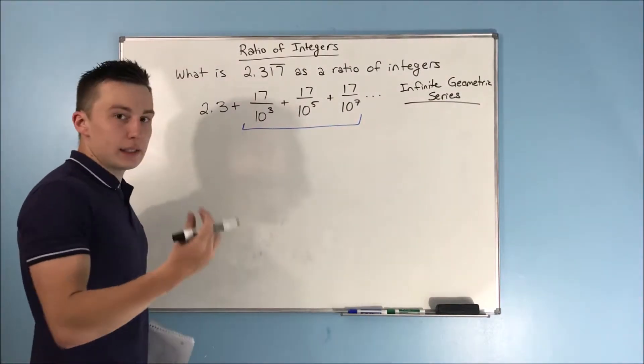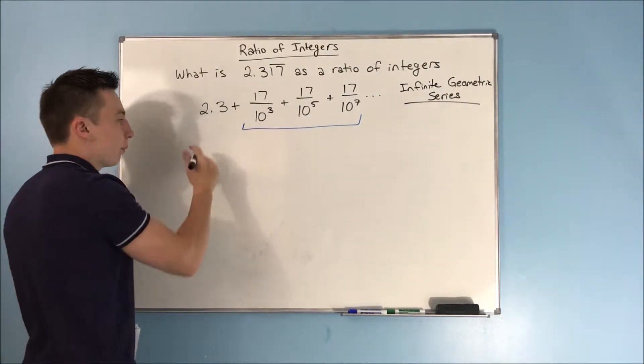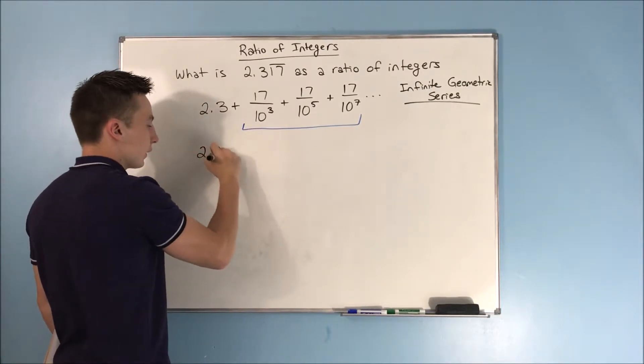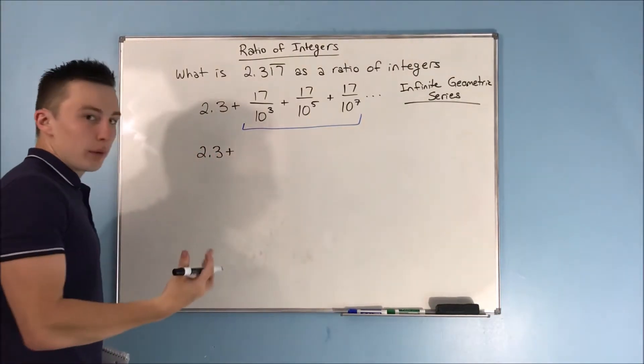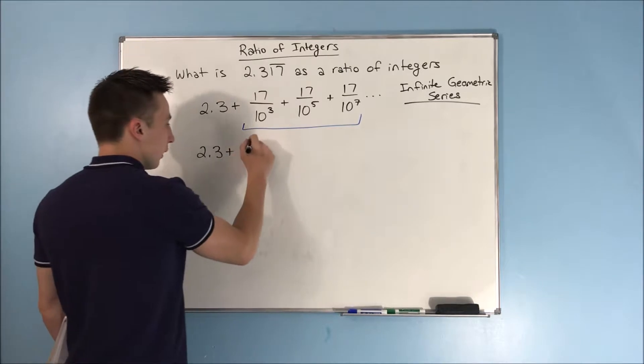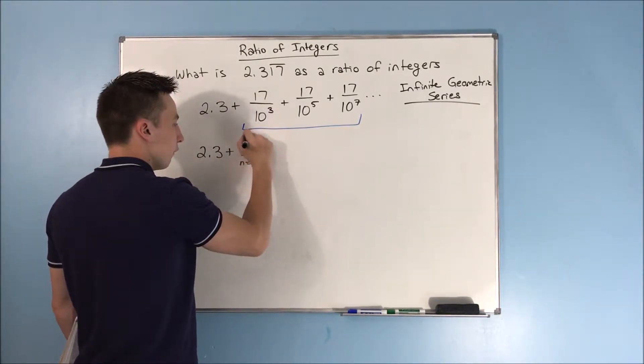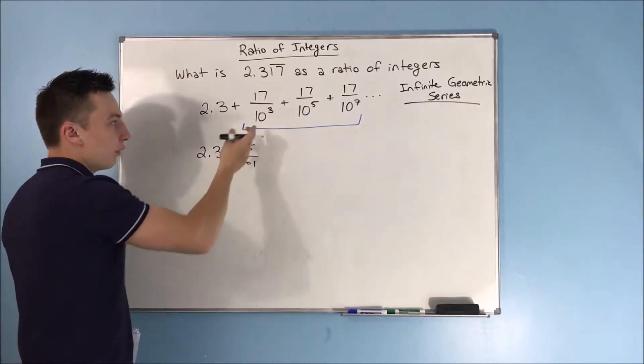It may be hard to see at first, but watch what happens. This 2.3 is not included in what we're talking about. You can rewrite this as 2.3 plus the sum from n equals 1 to infinity of...